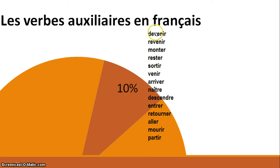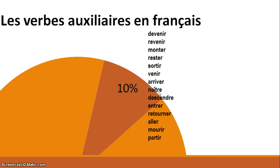If we look at devenir, which means 'to become,' that's a change of state — you are one thing changing to another thing. Revenir is a change of state; you are at one point and then going to a different point. Monter means going from one place to another place. An interesting one is naître, which means 'to be born' — you are really changing states from being in the womb to outside the womb. These are change of state verbs, and they use être as their auxiliary verb.